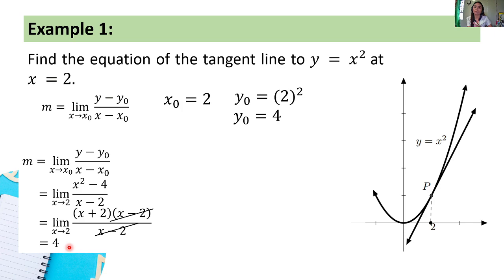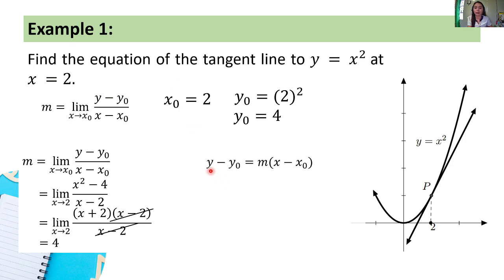Now, we're not done yet, class. Because again, we're after the equation of the tangent line. So we're going to use the point-slope form: y minus y₀ = m times (x minus x₀).